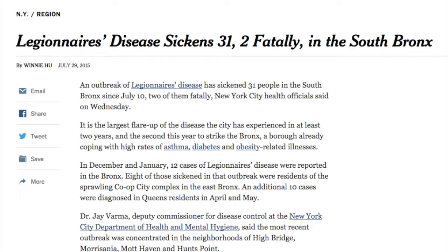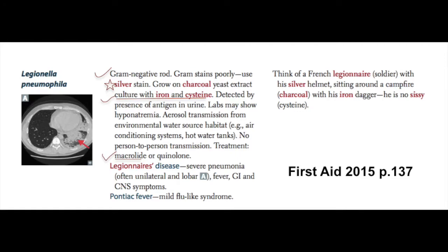Legionella is a gram-negative rod. The exam question is fairly straightforward because the vignette will give you the water source clue — this bacteria is a water source habitat. So they have to give you that clue, and from it you should be able to figure out it's Legionella.